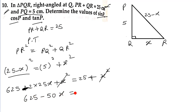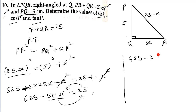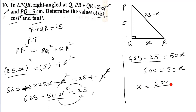625 minus 50x is equal to 25. We move 50x to the right-hand side and 25 to the left-hand side. So 625 minus 25 equals 50x, which gives 600 equals 50x. Dividing 600 by 50, we get x equals 12.